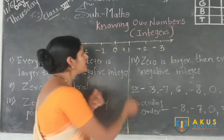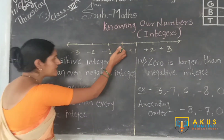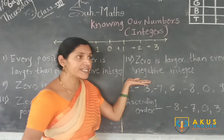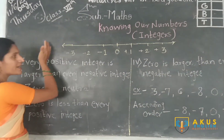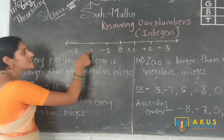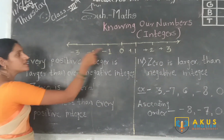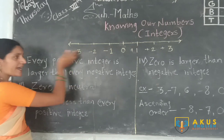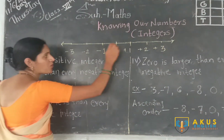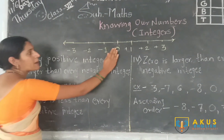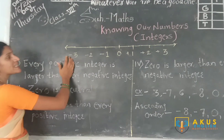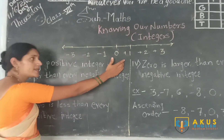At the same time, if we compare 0 with negative integers, 0 is larger than every negative integer. On the left side of the number line, 0 is greater than minus 1, greater than minus 2, greater than minus 3, and so on. So 0 is neutral — neither positive nor negative — but it is less than every positive integer and greater than every negative integer.